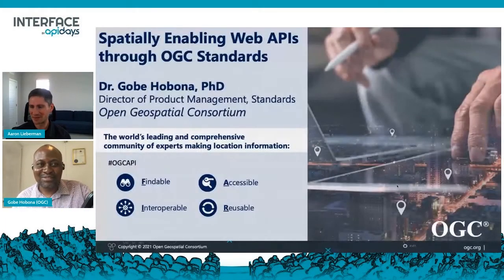We are here with our next presenter. Hello again, everyone. I'm Aaron Lieberman. I'm the Cloud Practice Manager at Big Compass, and I'm an API design and security specialist and evangelist. I'll be your MC yet again for this stage, and I'm very excited to announce Gobe Hirona. He is the Director of Product Management at Open Geospatial Consortium, and he'll be talking on spatially enabling web APIs through OGC standards.